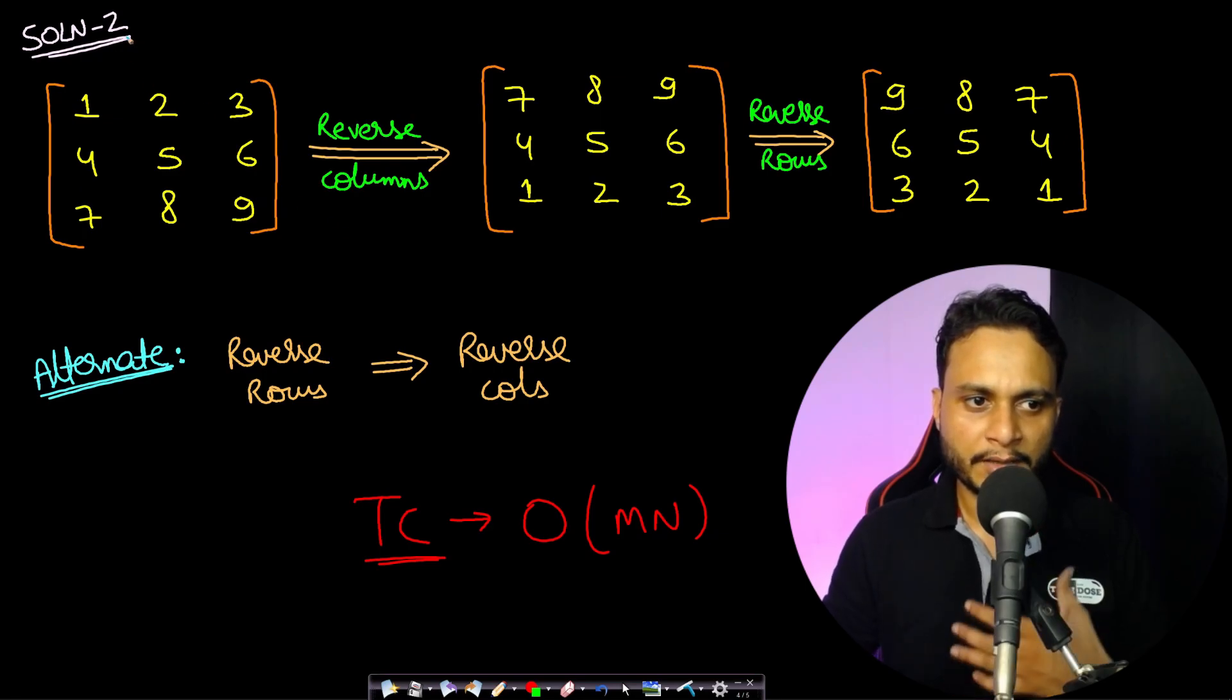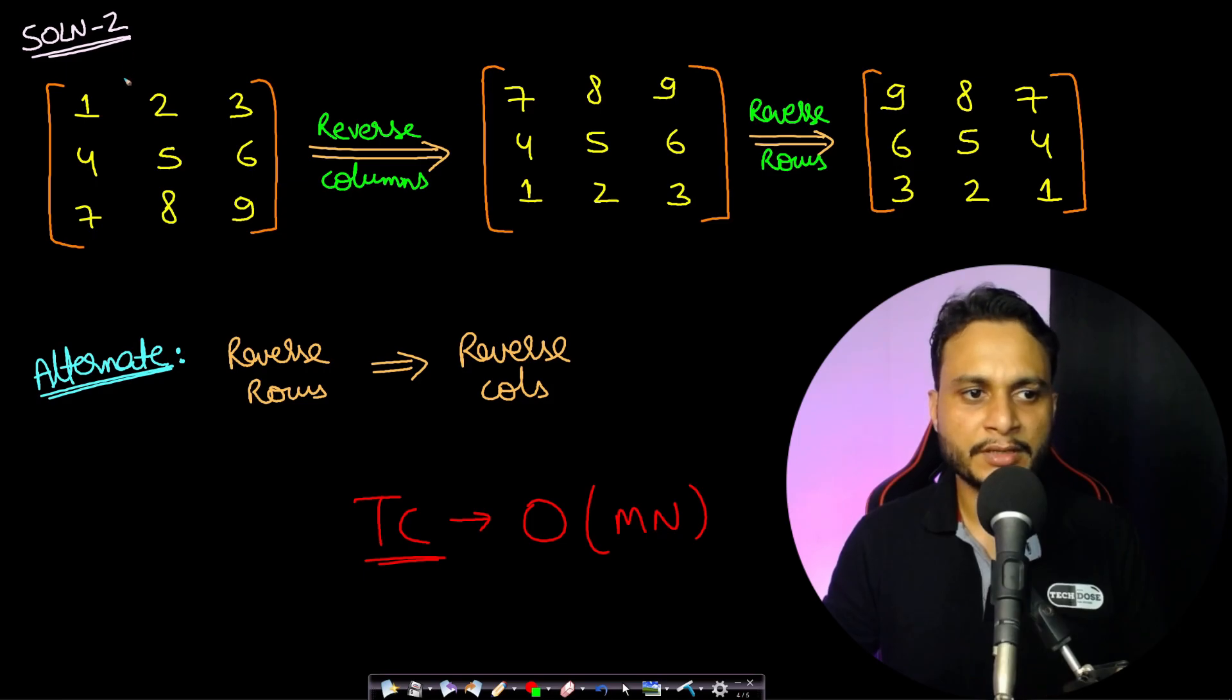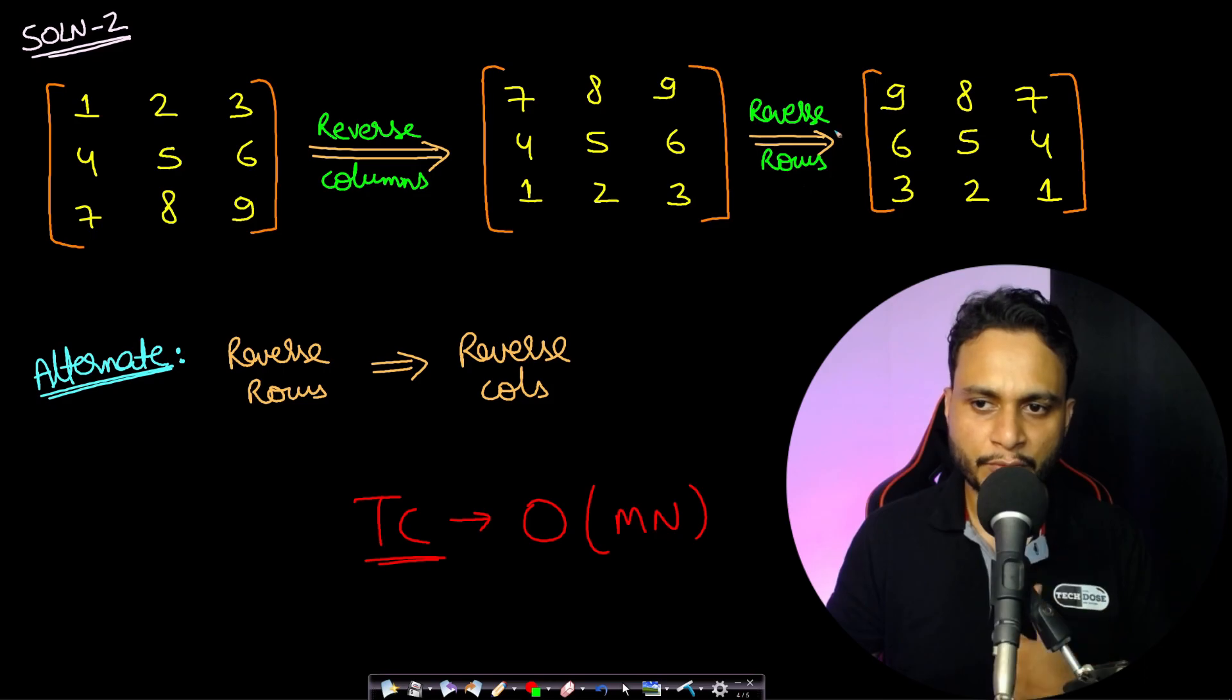Now let us look at solution 2. The solution 2 is even simpler with just two steps. In this case, if you just reverse the columns and followed by that if you just reverse the rows, then you will basically be rotating the entire given matrix by 180 degrees.